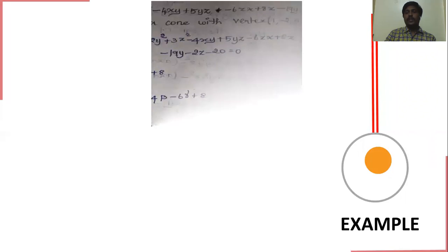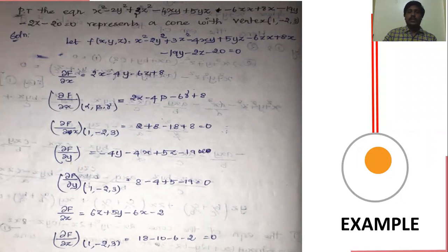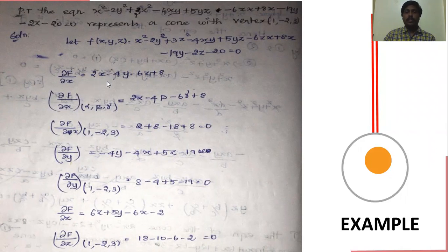Now we see an example. We are going to prove that x² − 2y² + 3z² − 4xy + 5yz − 6zx + 8x − 19y − 2z − 20 = 0 represents a cone with vertex (1, −2, 3). First, we find the partial derivatives: ∂f/∂x = 2x − 4y − 6z + 8. At (α, β, γ) = (1, −2, 3), it gives 2(1) − 4(−2) − 6(3) + 8 = 0.